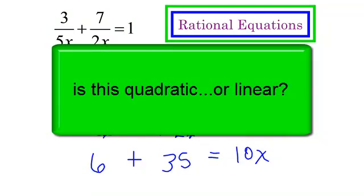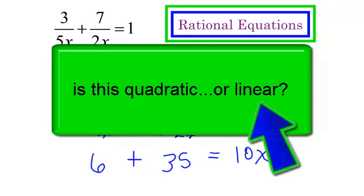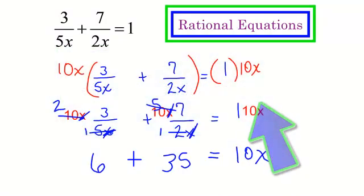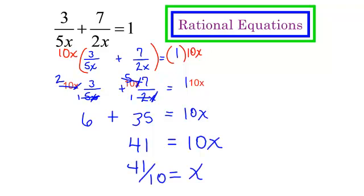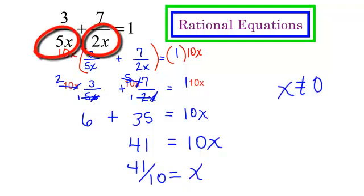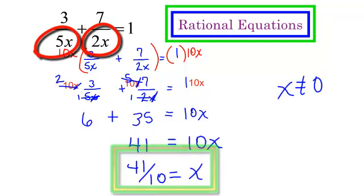Is this quadratic or is this linear? It looks like a very simple linear equation because I don't have any x-squareds, just x's. So 6 plus 35 will be 41, equals 10x. Divide both sides by 10, and x will equal 41 over 10. Now remember we said x could not equal 0 — our x is not 0, so we are good.